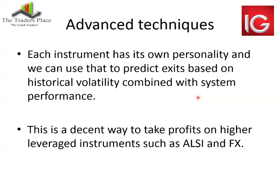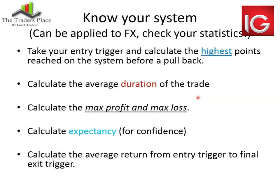Using swing lows once your profit target is taken out can be really profitable. But the chances of holding the full position and being able to hold for a 35% run are very slim. If you're only sitting with a third of your original position size, it is much easier. Each instrument has its own personality, and we can use that to predict exits based on historical volatility combined with your system performance. Coronation is one of those fantastically trending stocks that keeps making new highs with very low overall volatility. Something like Anglo-American has much bigger swings — up 20%, down that same 20%. You can tailor your exits to the instruments.